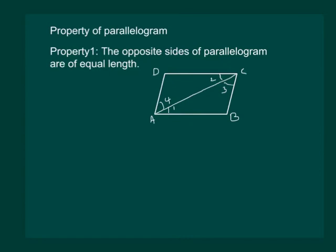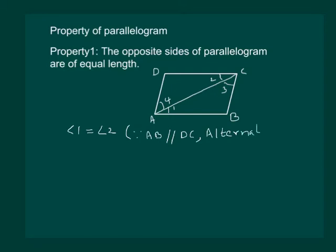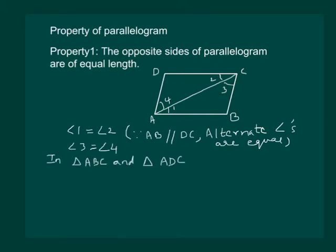Mark the angles 1, 2, 3, and 4. Then angle 1 is equal to angle 2, since AB is parallel to DC and alternate angles are equal. For the same reason, angle 3 is equal to angle 4. Looking at triangles ABC and ADC, we can see that angle 1 equals angle 2 and angle 3 equals angle 4.